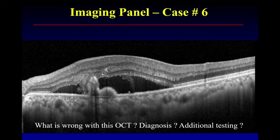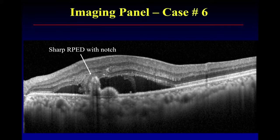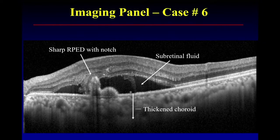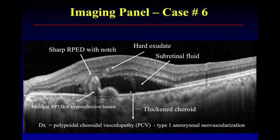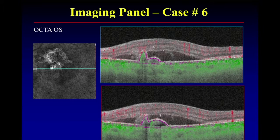Yes, we'd want ICGA. And is OCTA helpful? Yes. Here are the features: the sharp RPED, subretinal fluid, possibly a thickened choroid, and multiple RPEDs with this very distinctive hypo-reflective lumen, along with hard exudate — these are all features of polypoidal choroidal vasculopathy, or type 1 aneurysmal vascularization. There also appears to be a double layer sign. And there's the OCTA.